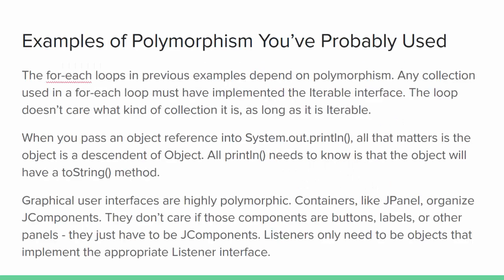Without knowing it, you've probably been using polymorphism a lot. The for-each loops depend on polymorphism — a for-each loop requires a collection that implements a particular interface, Iterable, with a method that returns a reference to another interface, Iterator, with hasNext() and next() methods for returning all elements in the collection one at a time. The loop doesn't care exactly what kind of Iterable collection it works with, or the exact kind of Iterator, as long as they support those interfaces.